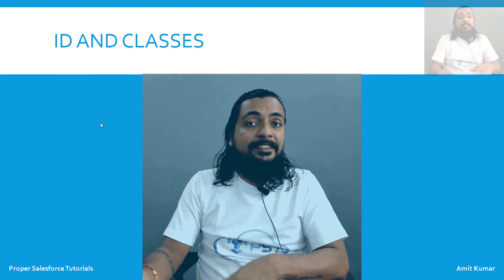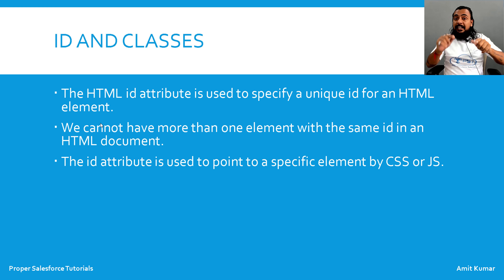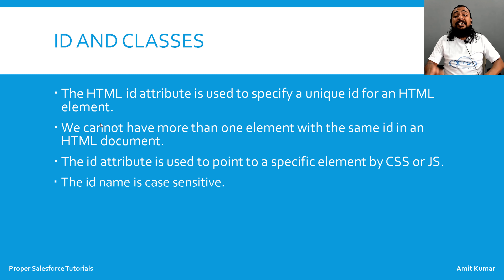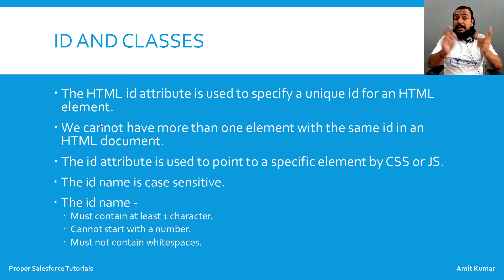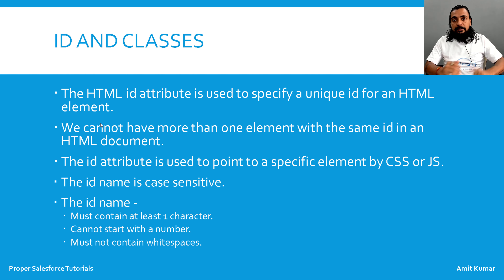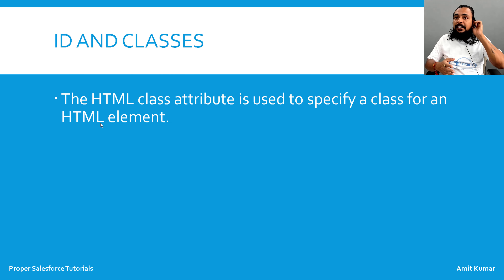Hey guys, I'm Amit Kumar and welcome to this video in which we are going to talk about IDs and classes. The HTML id attribute is used to specify a unique id for an HTML element. We cannot have more than one element with the same id in a document. The id attribute is used to point to a specific element in CSS or JS. The id name is case sensitive, it must contain at least one character, it cannot start with a number, and it must not contain white spaces.